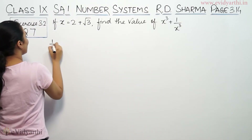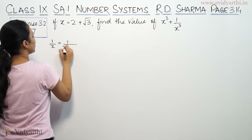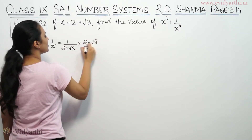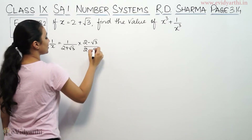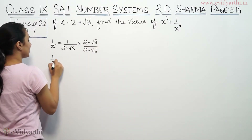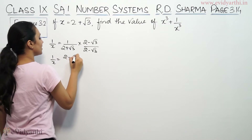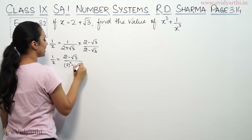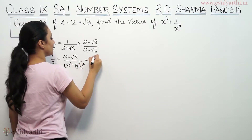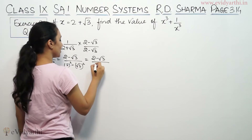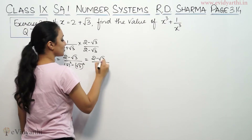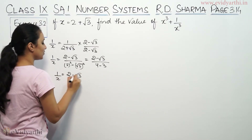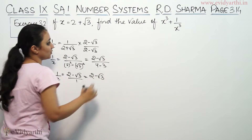So x is equal to 2 plus root 3, which means 1 by x is equal to 1 upon 2 plus root 3. We rationalize by multiplying by 2 minus root 3 over 2 minus root 3. This is of the form (a+b)(a-b). The denominator becomes 2 squared minus root 3 squared, which is 4 minus 3 equals 1. So 1 by x equals 2 minus root 3.